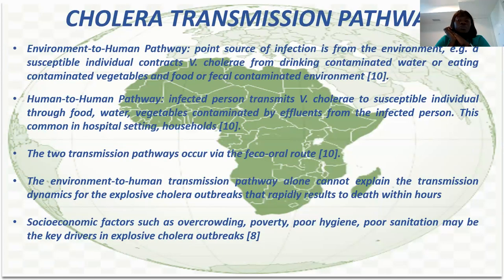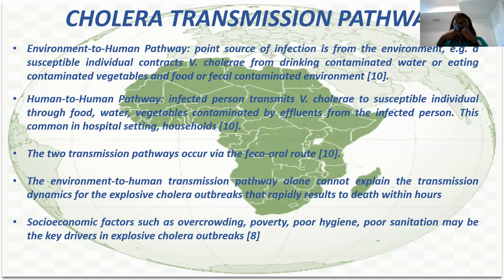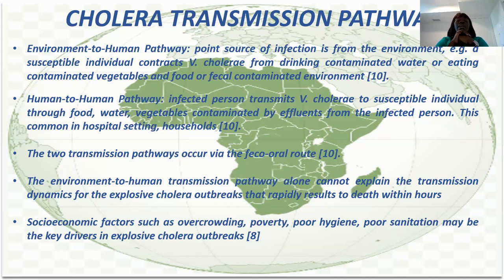The transmission of cholera can occur in two ways. Since it is contacted through contaminated food and water, there is an environment-to-human pathway — someone can get infected by eating food or things contaminated with cholera. Also, someone can get infected through human-to-human transmission, most especially in hospital settings or in the household. When someone is infected in the household, everybody in the house is already exposed to the disease. All of this can only occur through the fecal-oral route — that is, through what we take into our body. However, human-to-human transmission alone cannot explain why cholera outbreaks result in so many deaths within hours.